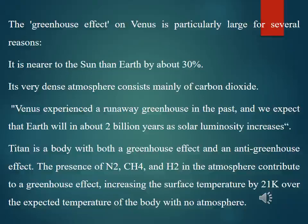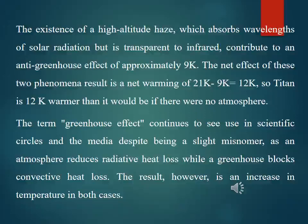Titan is a body with both a greenhouse effect and an anti-greenhouse effect. The presence of nitrogen, methane, and hydrogen in the atmosphere contribute to a greenhouse effect, increasing the surface temperature by 21 Kelvin over the expected temperature of a body with no atmosphere. The existence of a high-altitude haze which absorbs wavelengths of solar radiation but is transparent to infrared contributes to an anti-greenhouse effect of approximately 9 Kelvin.